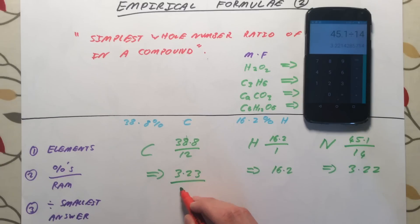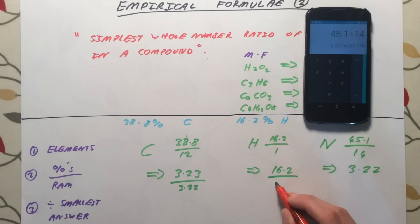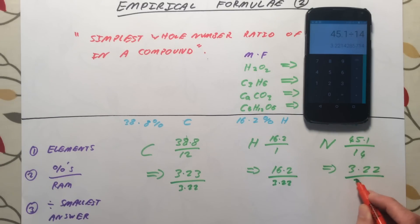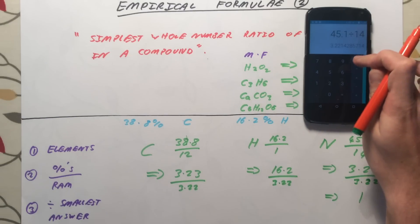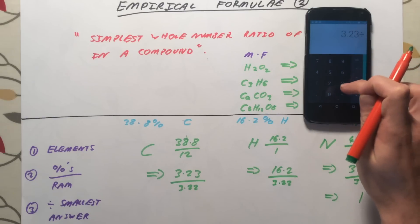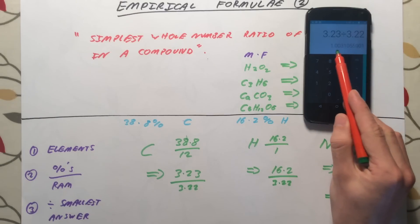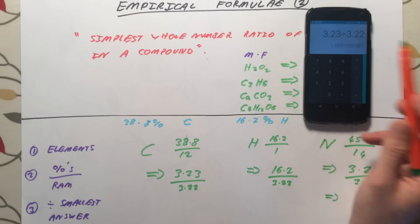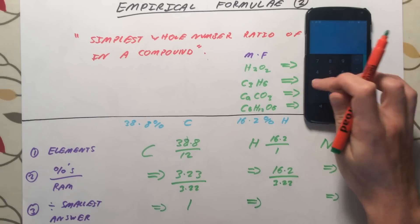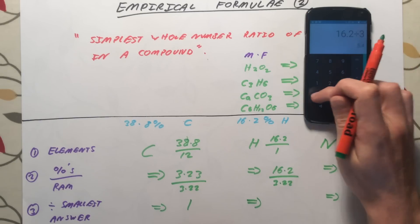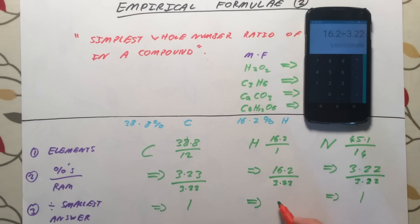The third step is to divide each answer by the smallest answer we've got, which simplifies the ratio. The smallest number here is 3.22. So we divide 3.23 by 3.22, giving approximately 1. We divide 16.2 by 3.22, giving 5.03 — we round that to 5. And we divide 3.22 by itself, giving 1.